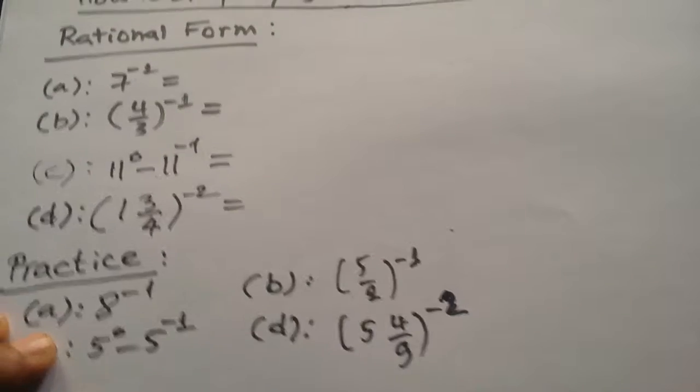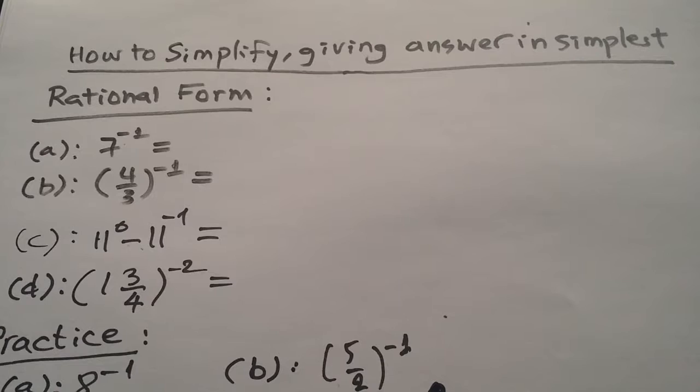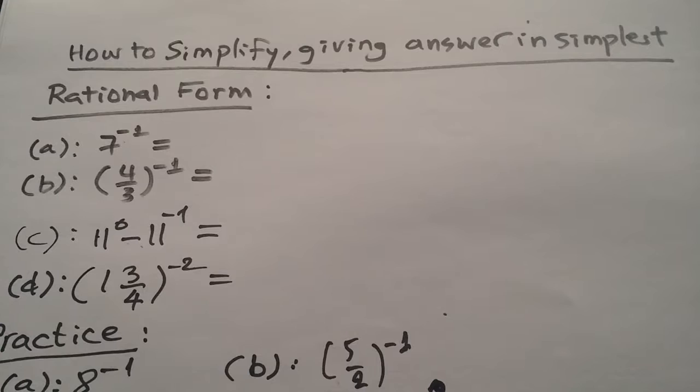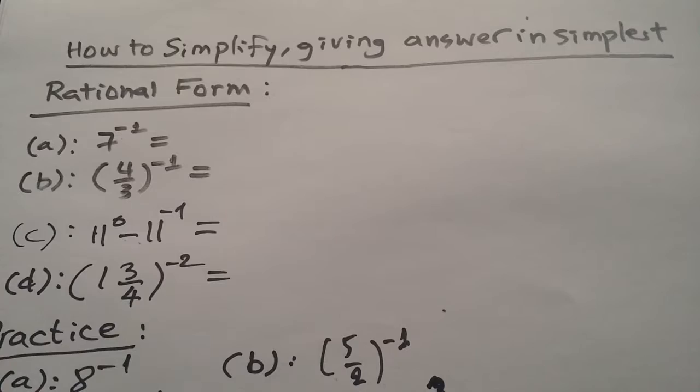Today we study how to simplify a given answer in simplified rational form. The expression has a negative index: minus one, minus one, minus one, minus two, and we would like to write it in simplest rational form — meaning one divided by something, or one number divided by another, with non-negative index.